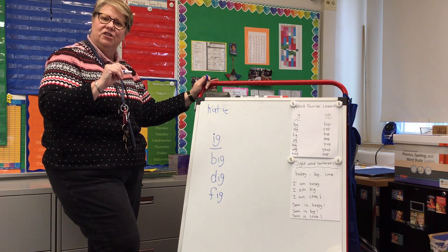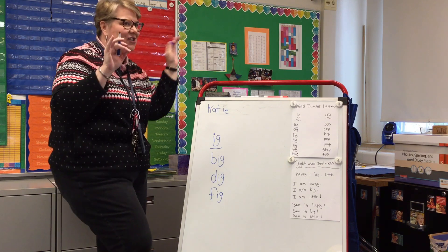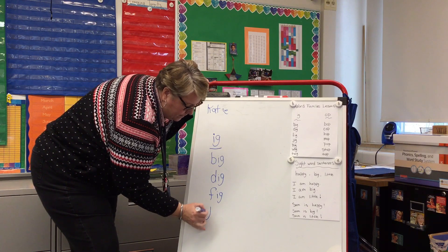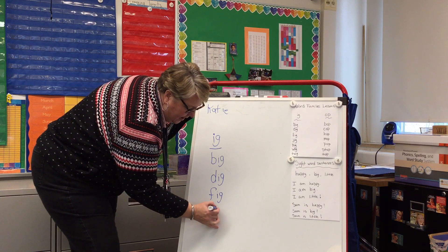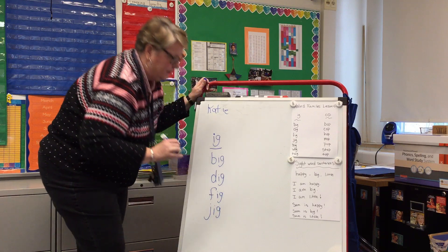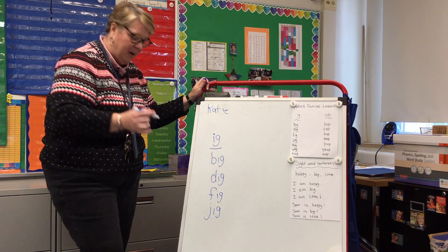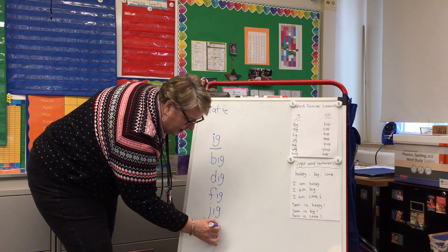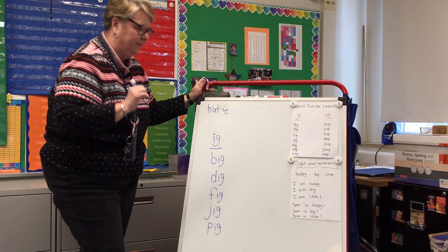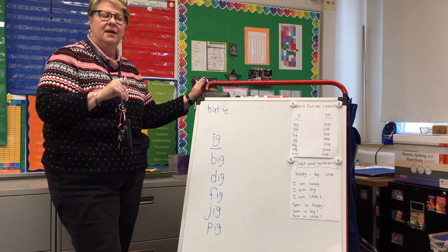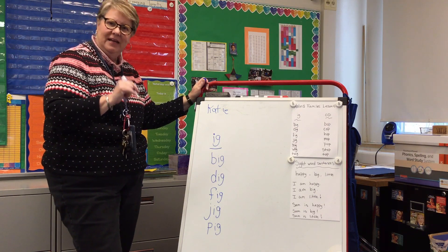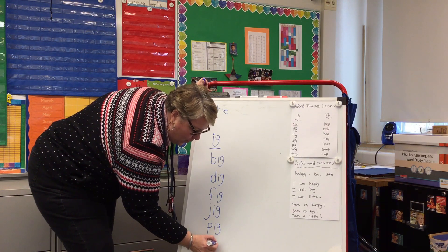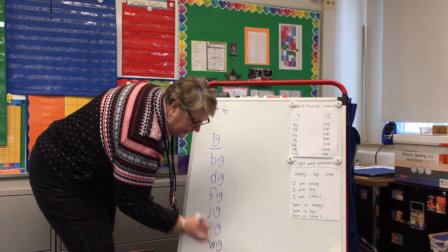And then the next one is 'jig' — you could dance a little jig. It's J like jar, I like iguana, and G like goat. And the next one is 'pig' — P like pig, I like iguana, G like goat. And the next one is 'wig' — like for Halloween you could wear a wig. It's W like window, I like iguana, and G like goat.